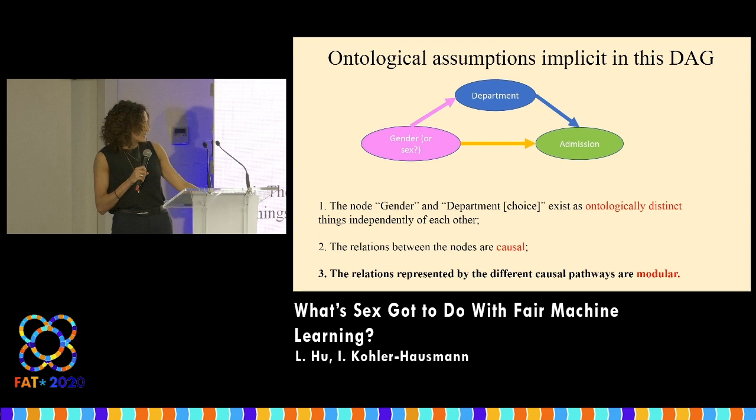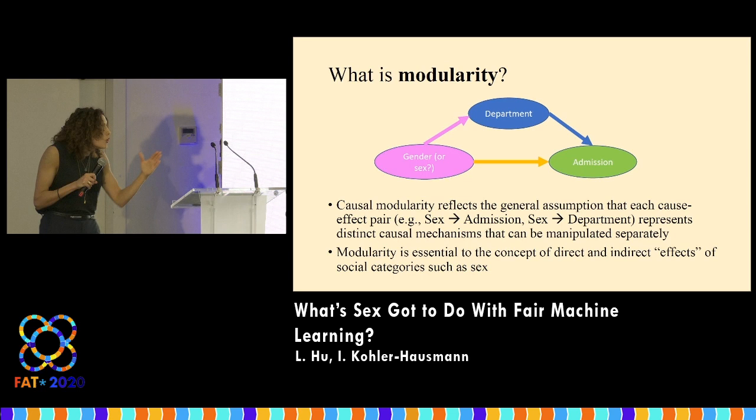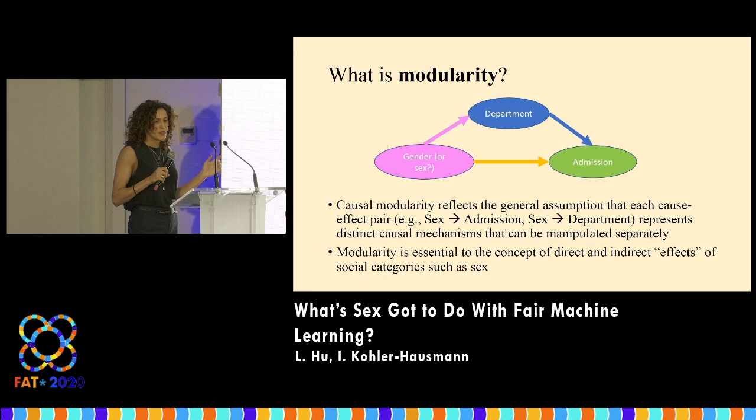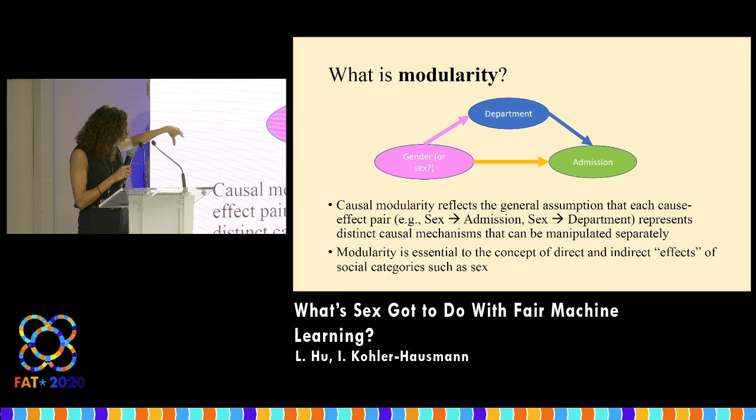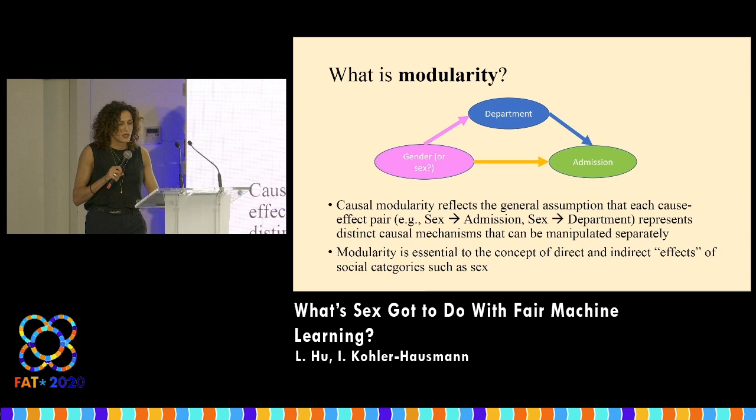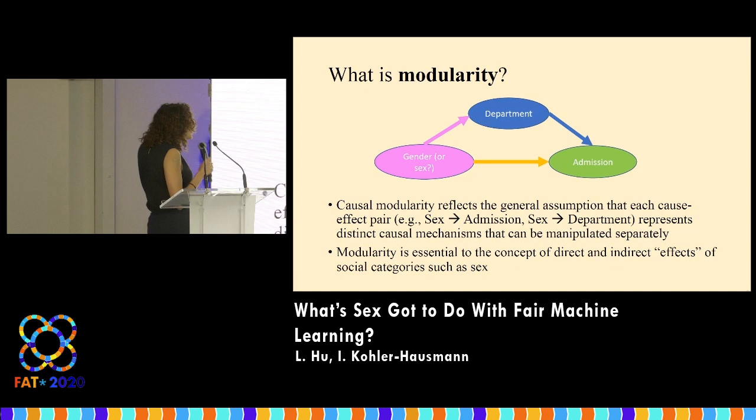What does modularity mean? Modularity basically means that each cause-and-effect pair has its own pathway, which is equivalent to saying it's theoretically possible to surgically intervene on one node without disrupting the causal dependencies in the system. So the causal force that gender exerts on admission exists independently of the causal force that gender exerts on department choice. This assumption of modularity is really essential to this whole line of work.